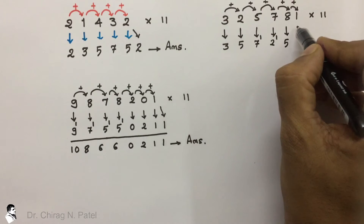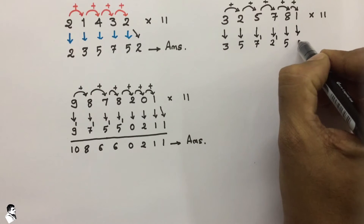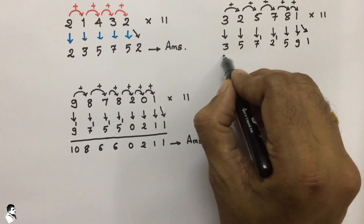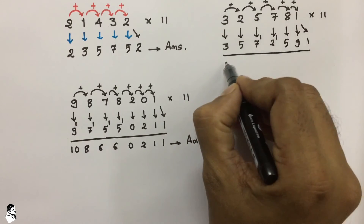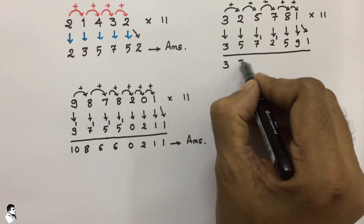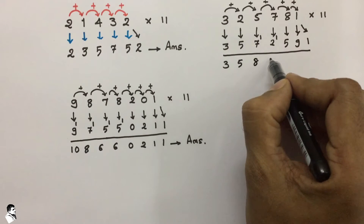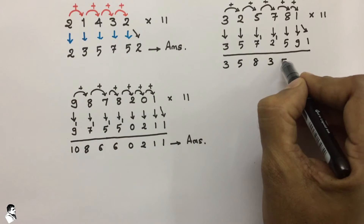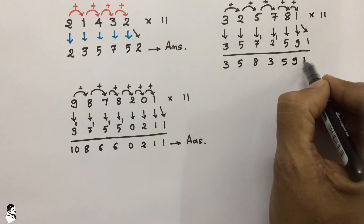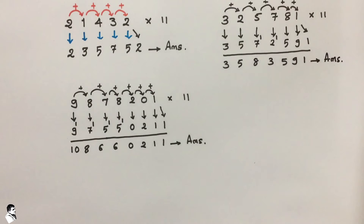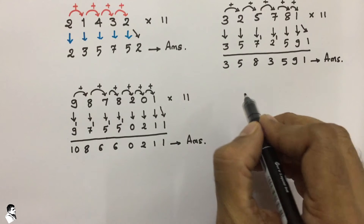Then 7 plus 8 is 15, so 5 is here and 1 carries over. Then 8 plus 1 is 9, and write down 1 as it is. Now make a summation: 3, 5, 7 plus 1 is 8, then 3, 5, 9, 1. This is the final answer.